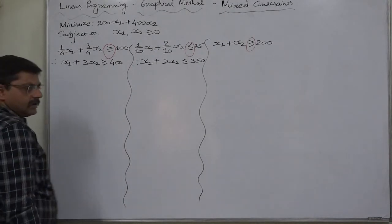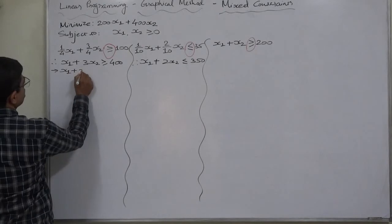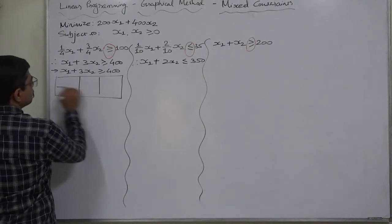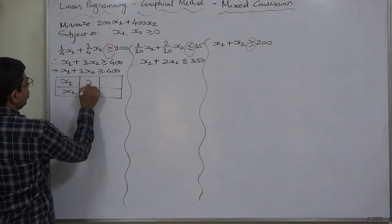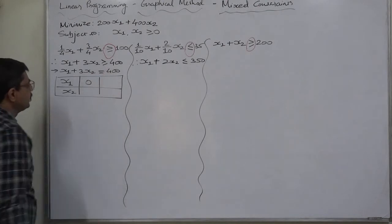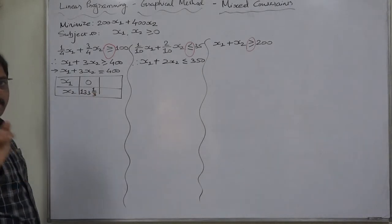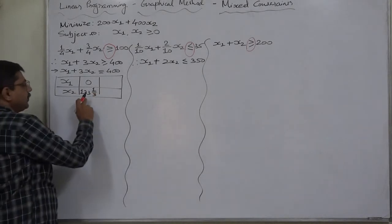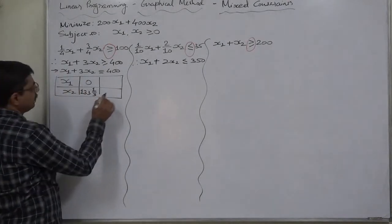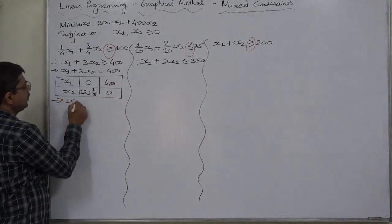Now for the equation x1 plus 3x2 equals 400: to find the two points, if x1 is 0, then 3x2 equals 400, so x2 equals 133 and one-third. Be careful — at the time of preparing the graph on graph paper, we have to take extra care to locate this kind of fractional value.